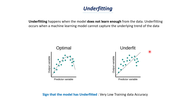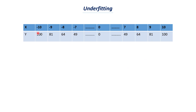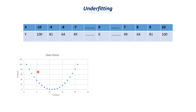Let me explain this with an example. Let us say we have a set of values — values of x and values of y, where y depends on x. If the value of x is minus 10, then the value of y is 100. If the value of x is minus 9, then the value of y is 81, and so on. Now let us try to plot all these data points in a graph. This is the plot we are getting — it represents a parabola. If you join all the data points, this is a parabola.